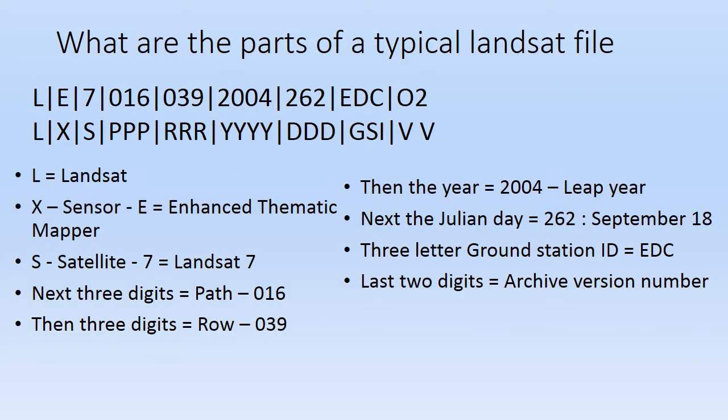Files are divided into various parts. As you can see from the screen, the L stands for Landsat. After that, the next set of information is the type of sensor, followed by the number of the satellite — in this case, Landsat 7. The next is the path and row, which indicates specifically where on the globe the data was collected. Then comes the year, the Julian date, the ground station ID where it was collected, and finally the archive version number.